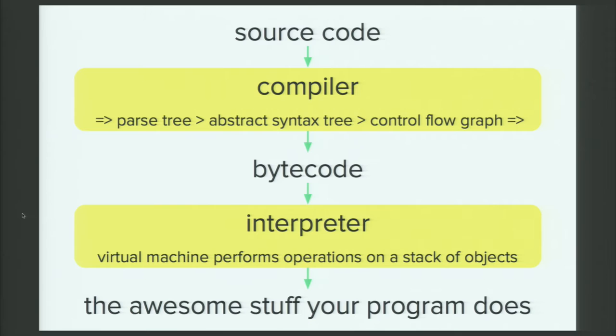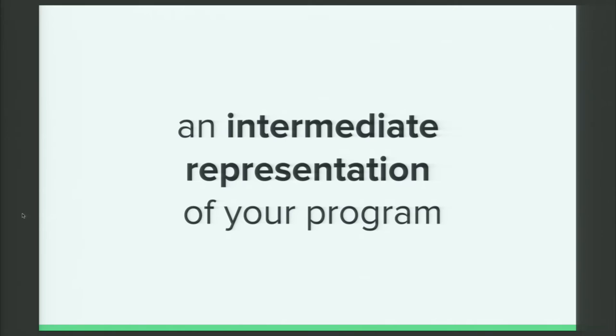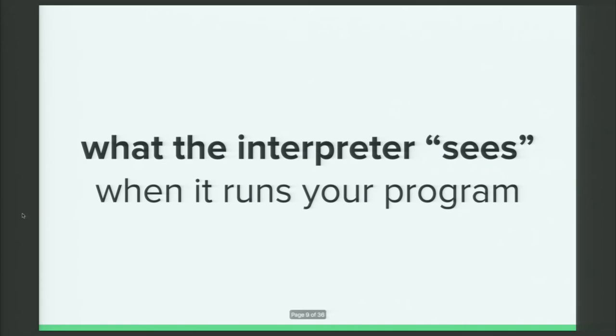Okay, so this bytecode, what is it? Well, as we saw, it goes kind of in between, it comes at an in between place between your source code and the effects of your program. So in one sense, it's an intermediate representation of your program. And in fact, it's the representation that the interpreter itself sees. The interpreter, unfortunately, doesn't get to look at your beautiful, readable, pythonic source code. It only gets to see this bytecode.